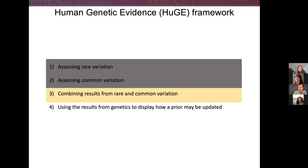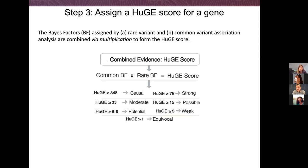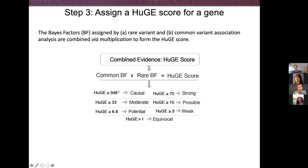Step 3 is where we combine the rare and common variation to create what we call the HUGE score. Just like in step 2, we multiply the common Bayes factor by the rare Bayes factor — this equals the HUGE score. Based on the HUGE score, we put it into a category based on a posterior probability that the gene is indeed causal for this phenotype. We took a very weak prior and assumed that a causal gene would be around a 95% posterior, then back-calculated the Bayes factor required to equal that posterior. There are seven categories ranging from equivocal — just some genetic evidence — all the way up to causal, meaning it's very likely to actually impact your phenotype.